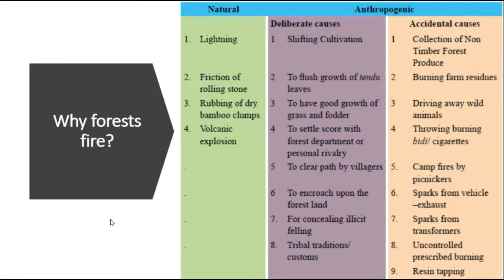Anthropogenic causes are categorized under deliberate and accidental causes. Deliberate causes include shifting cultivation, also called slash-and-burn, where a patch of forest land is burned for agriculture activity. After three or four years, when the fertility of the land degrades, that patch is abandoned and another patch of forest is burned for the same activity. This deliberate burning for agriculture is called shifting cultivation.